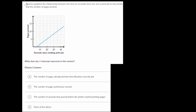So in this one, Beatrice graphed the relationship between the time in seconds since she sent a print job to the printer and the number of pages printed. So our horizontal axis, our x axis here, represents the time since she sent the print job to the printer. And then the y axis represents the number of pages printed. So it looks like there was a bit of a delay before anything started getting printed. Looks like after five seconds, the first page started being printed. And then as time increased, the printed pages increased linearly.